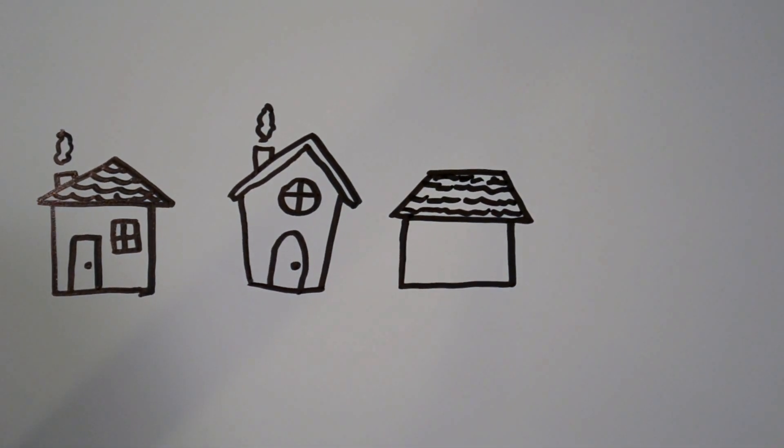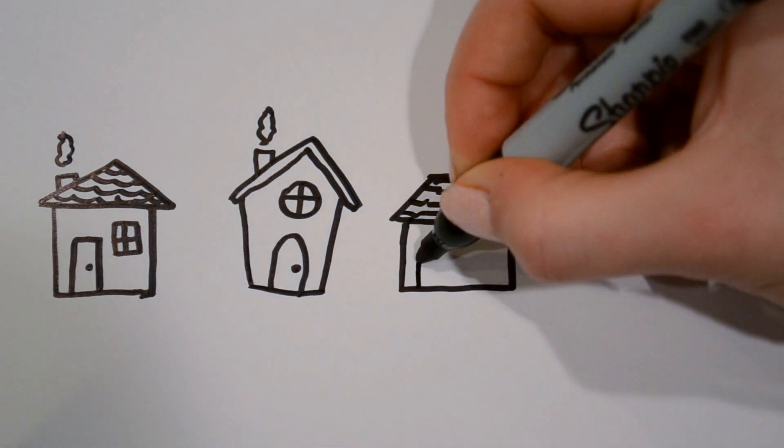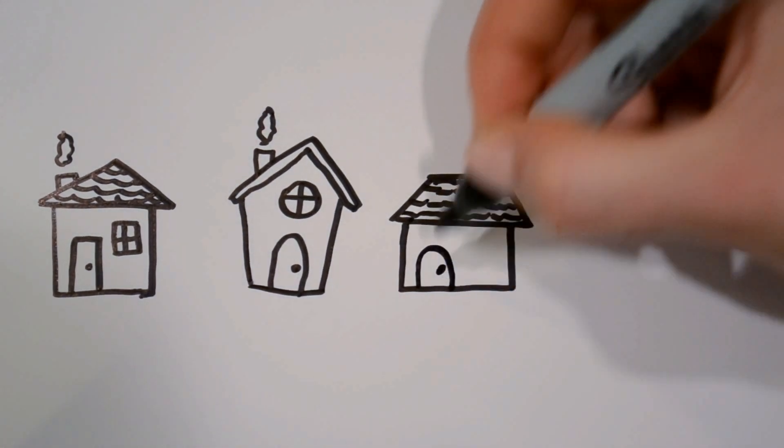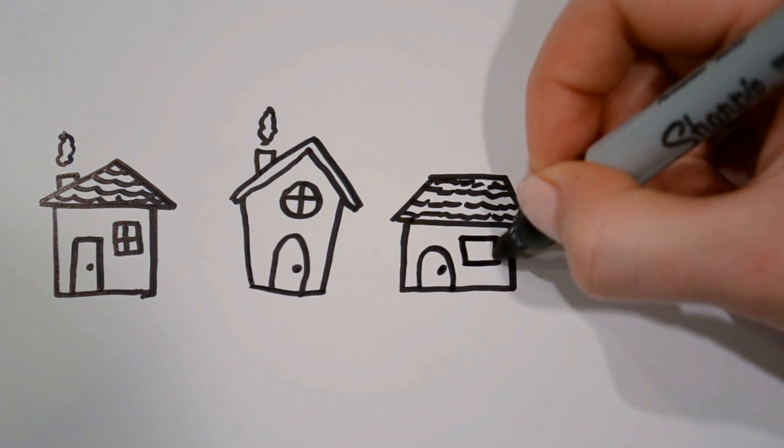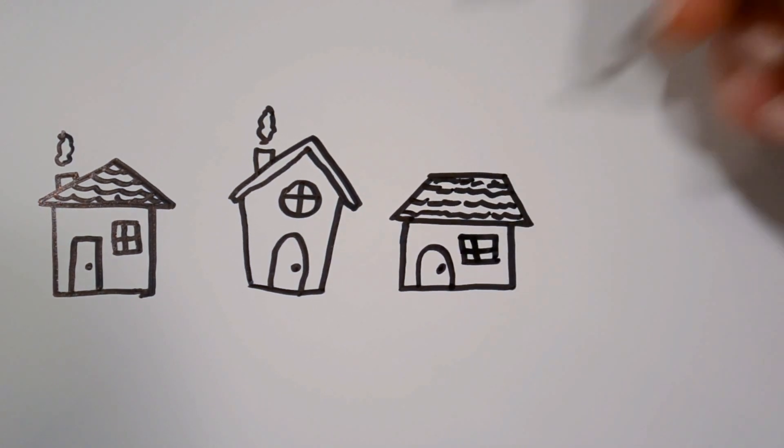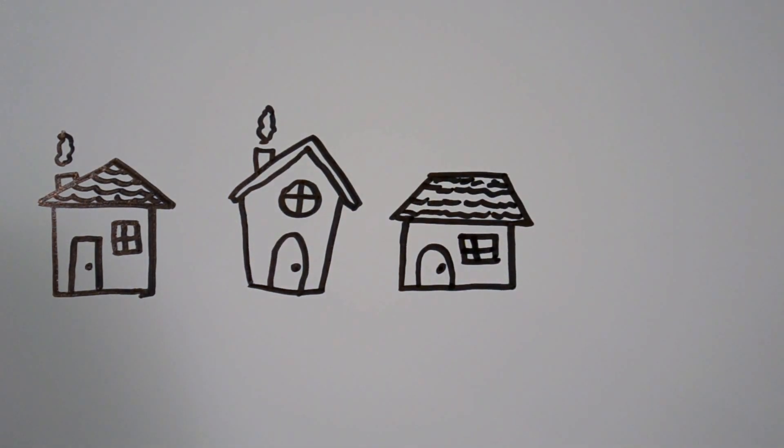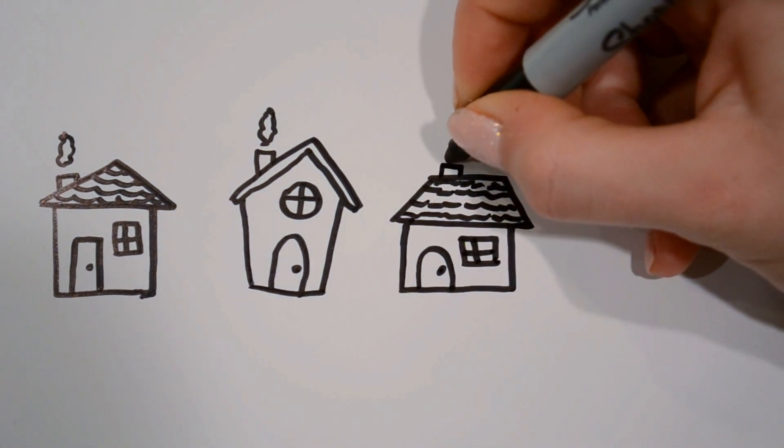And next I'm going to draw also a curved door but a square window just off to the side there. And then for this roof I'm going to add it right on the top, really small.